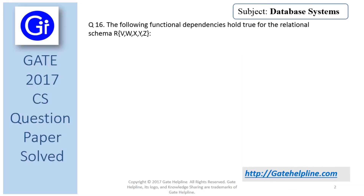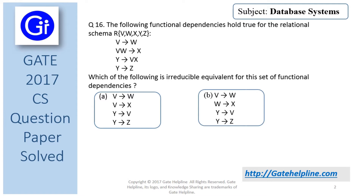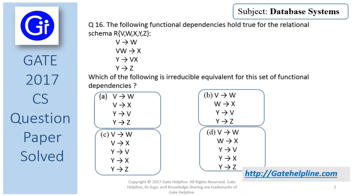Question number 16: The following functional dependencies hold true for the relational schema R. The dependencies are: V → W, VW → X, Y → VX, and Y → Z. Which of the following is an irreducible equivalent for this set of functional dependencies? The options are A, B, C, and D.